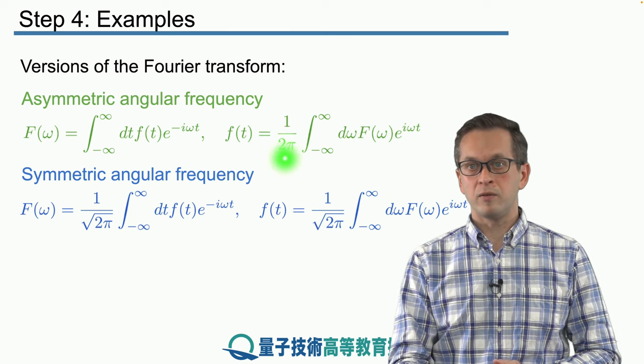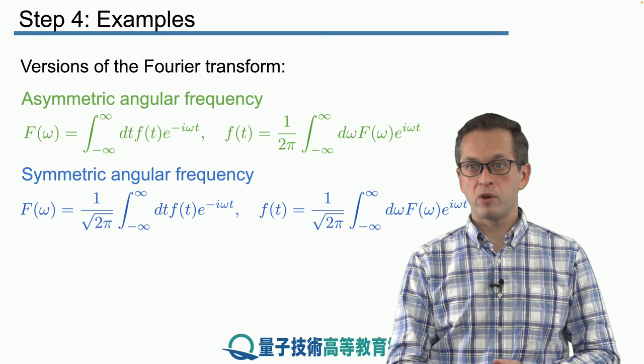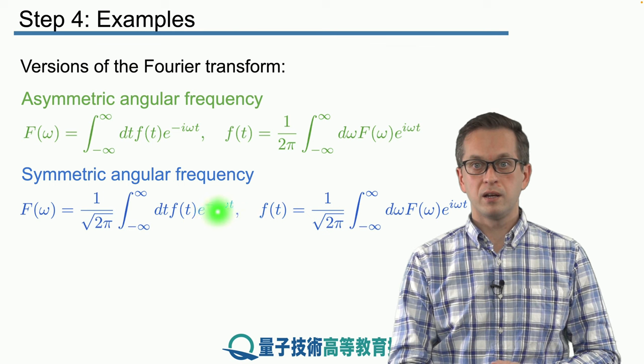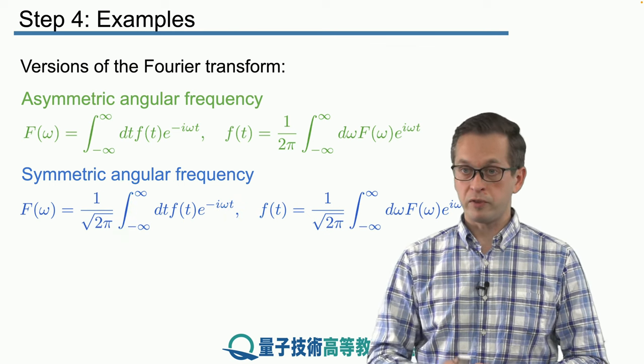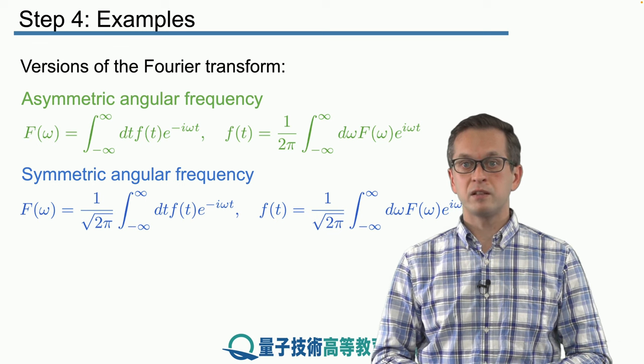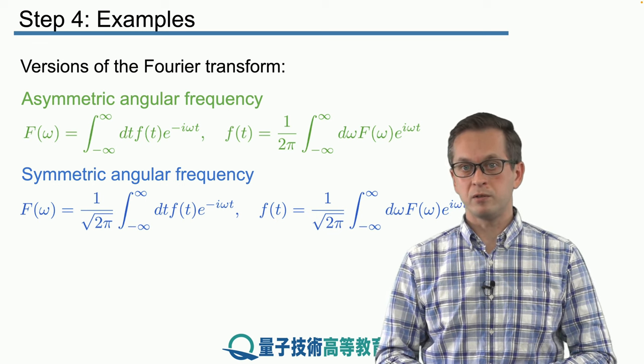But it's just the coefficients in front of the integrals that have changed. And you can see that where we had 1 over 2 pi in the inverse Fourier transform before, we have 1 over square root of 2 pi. And we have the same coefficient in front of the forward Fourier transform. This is a nice symmetric case.